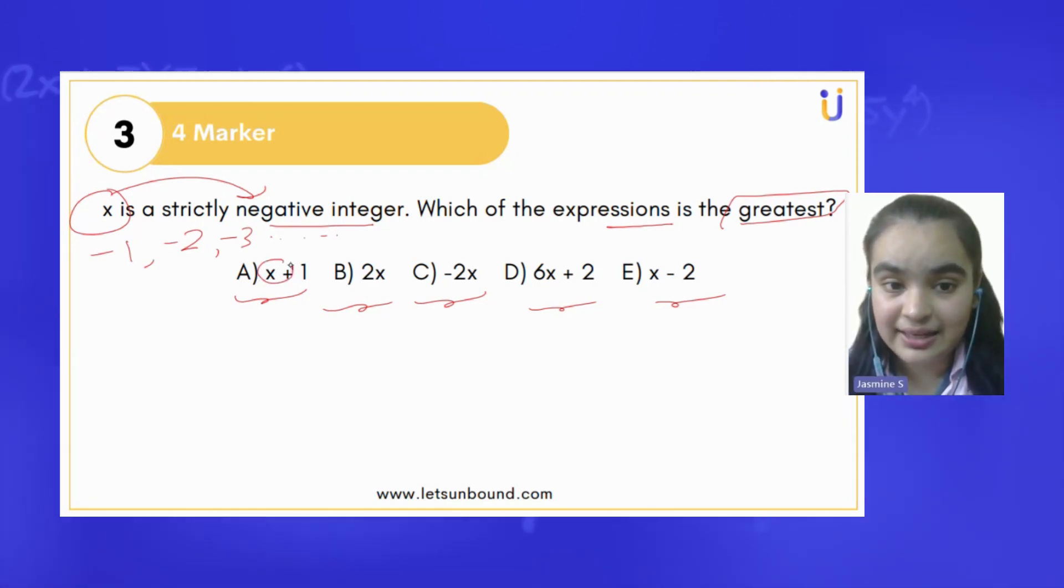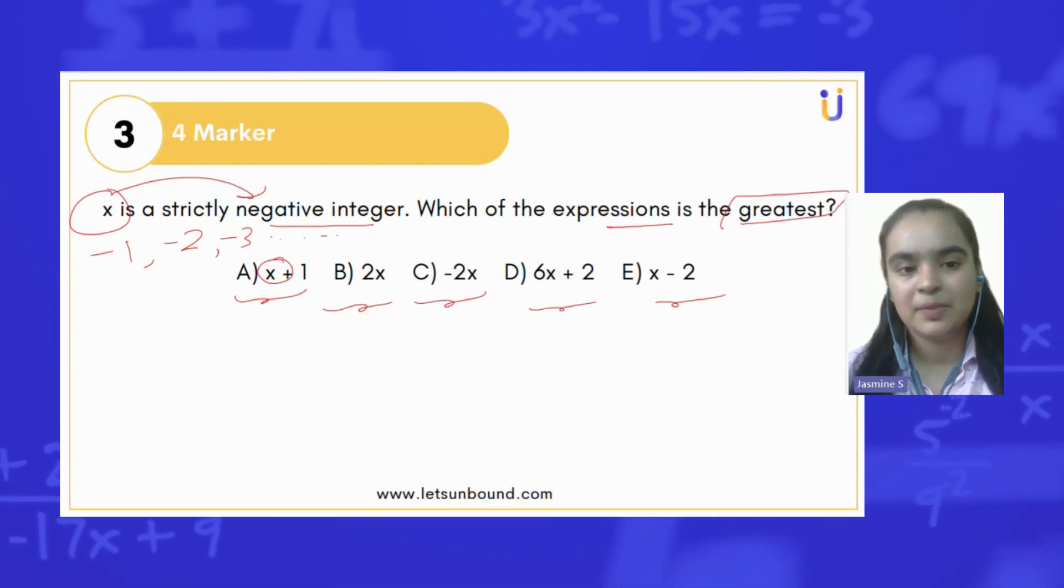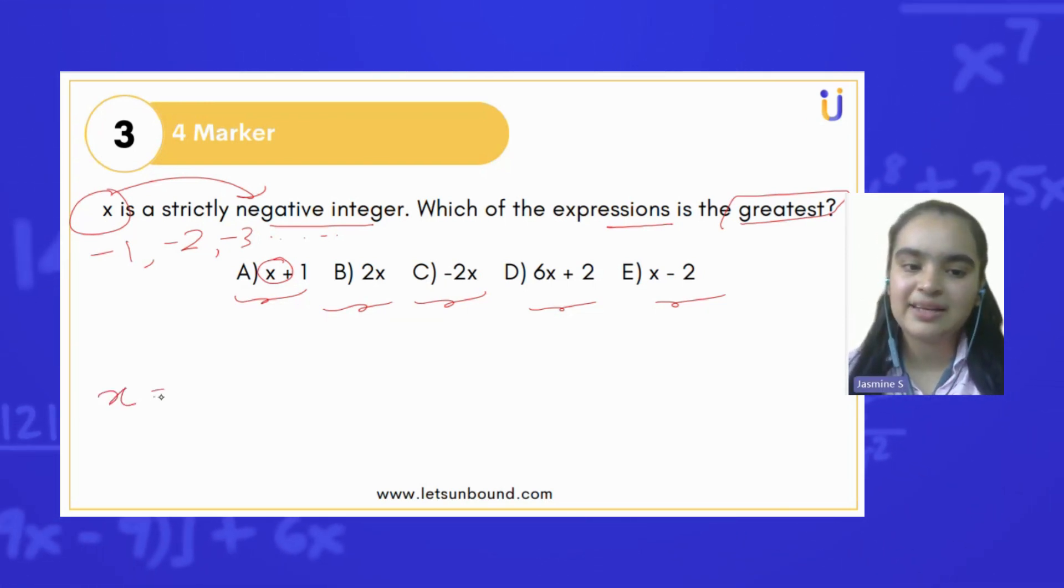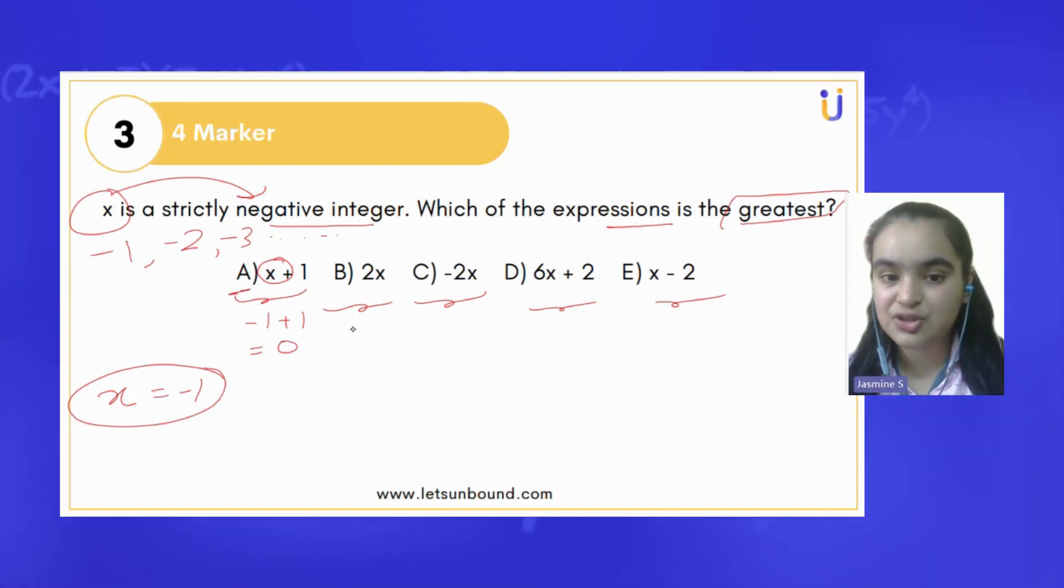If x is negative, for example let's take x as minus one. Let's put the value of x in question number A, so it will be -1 + 1, and the answer will be zero.